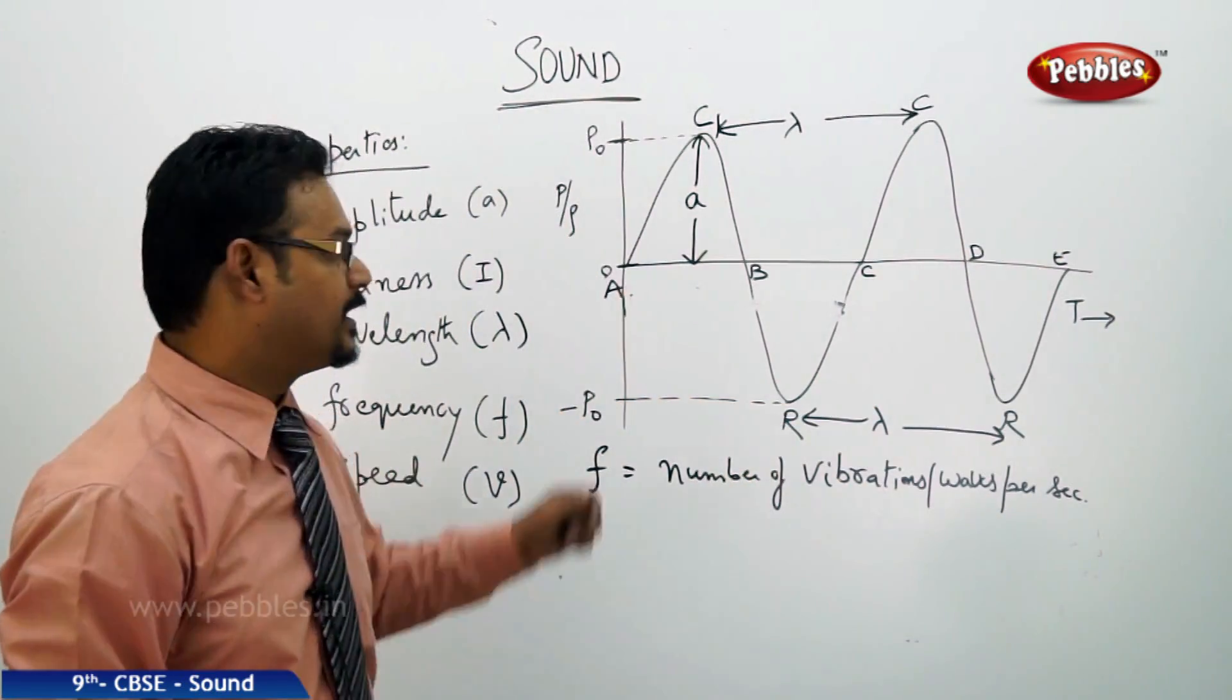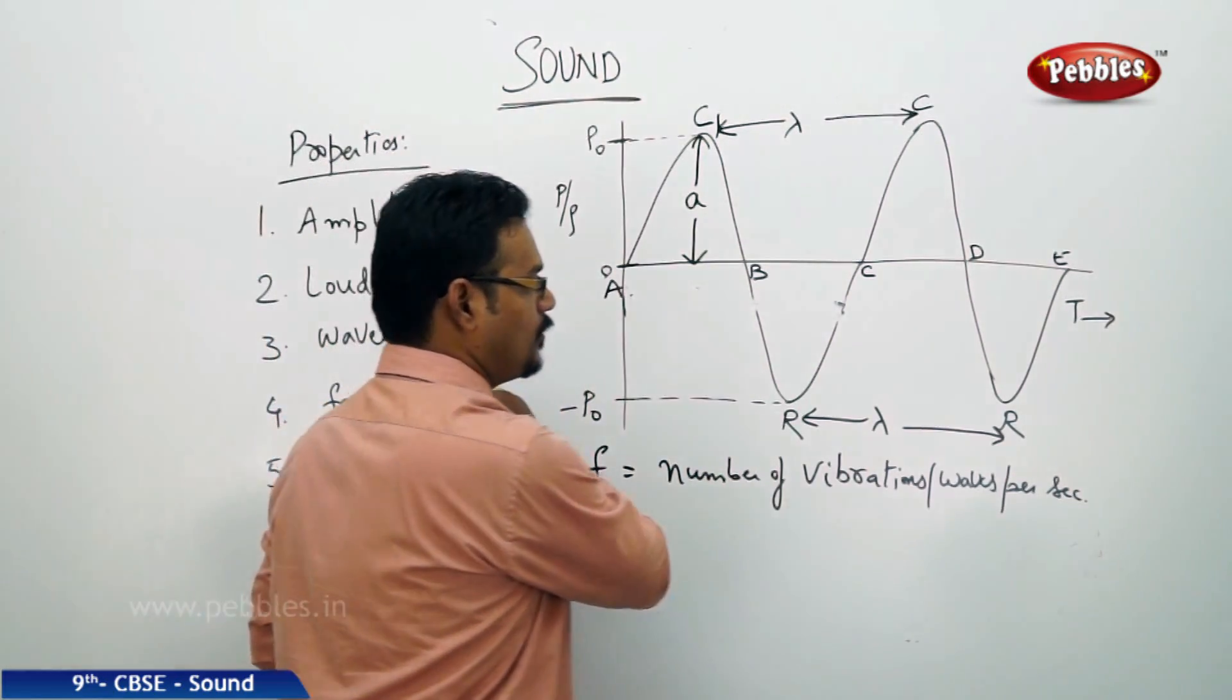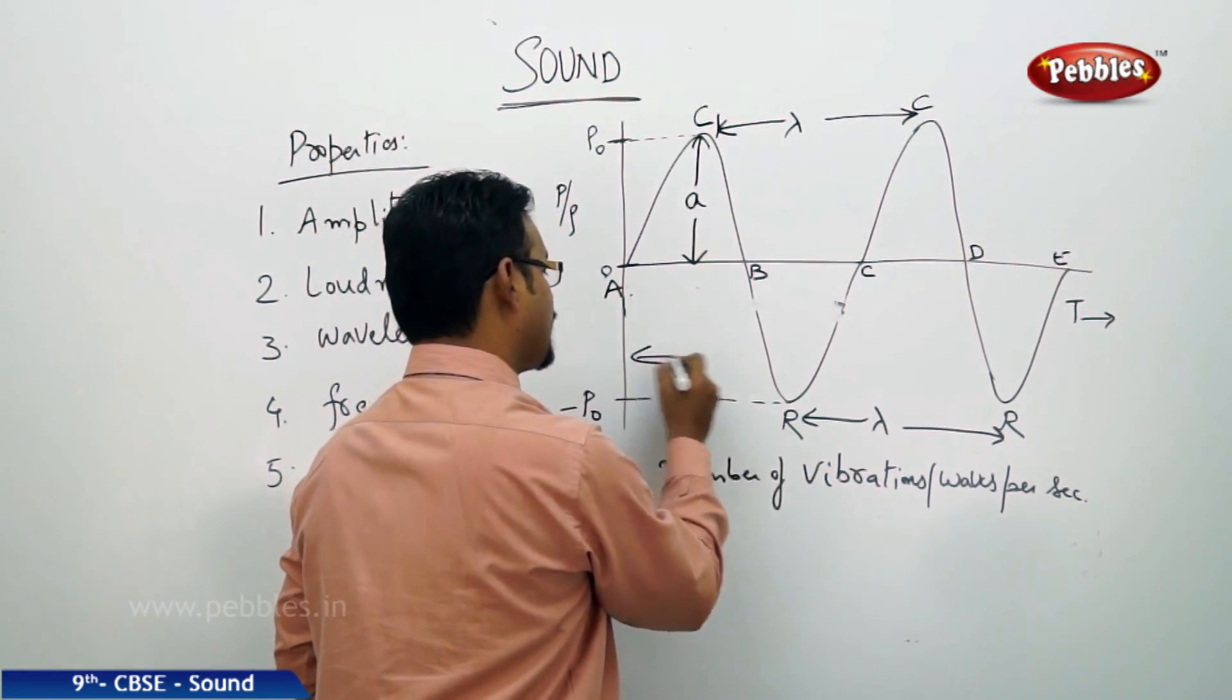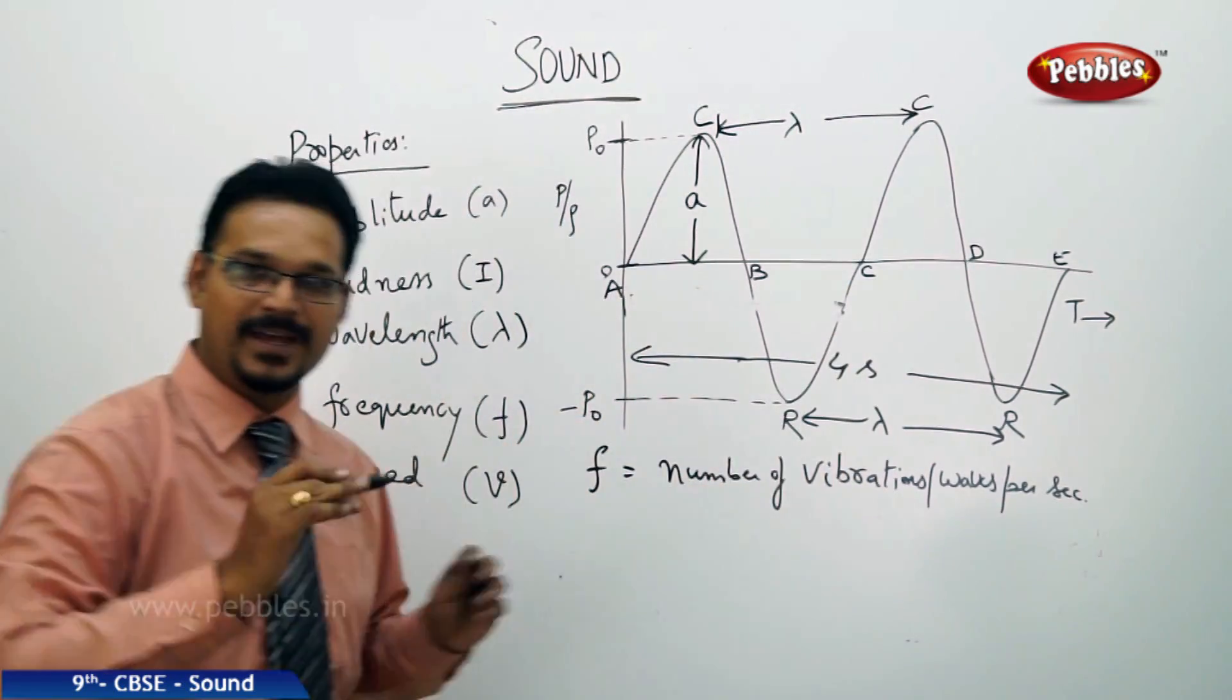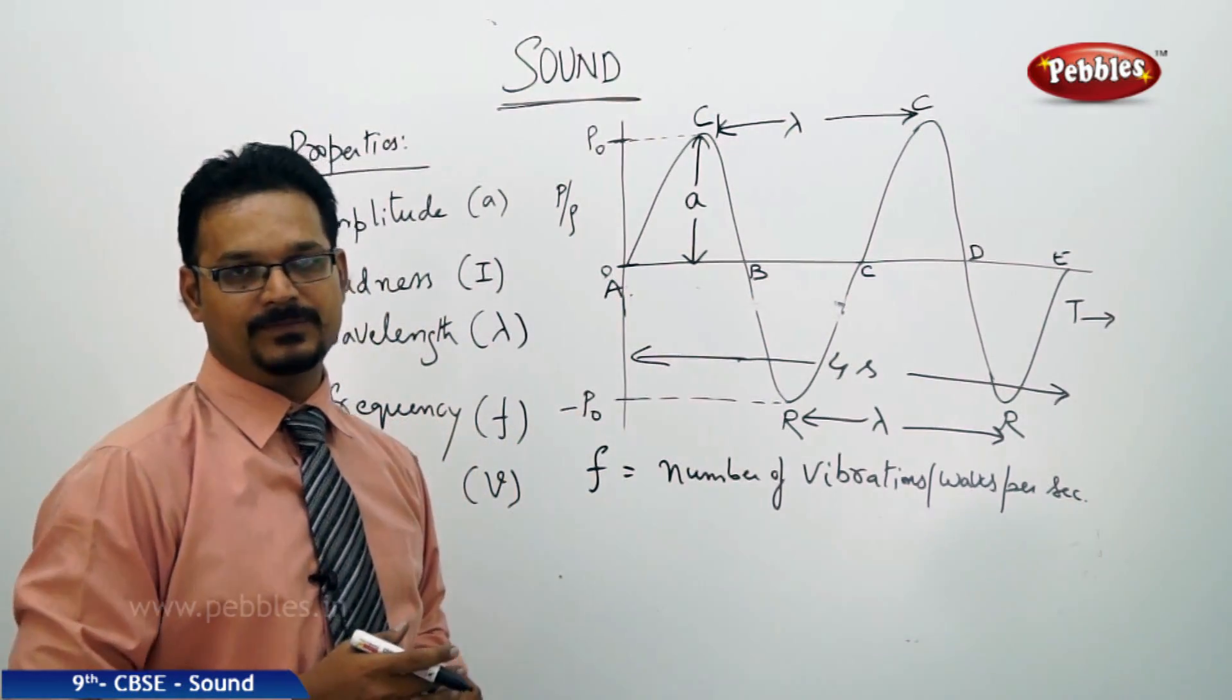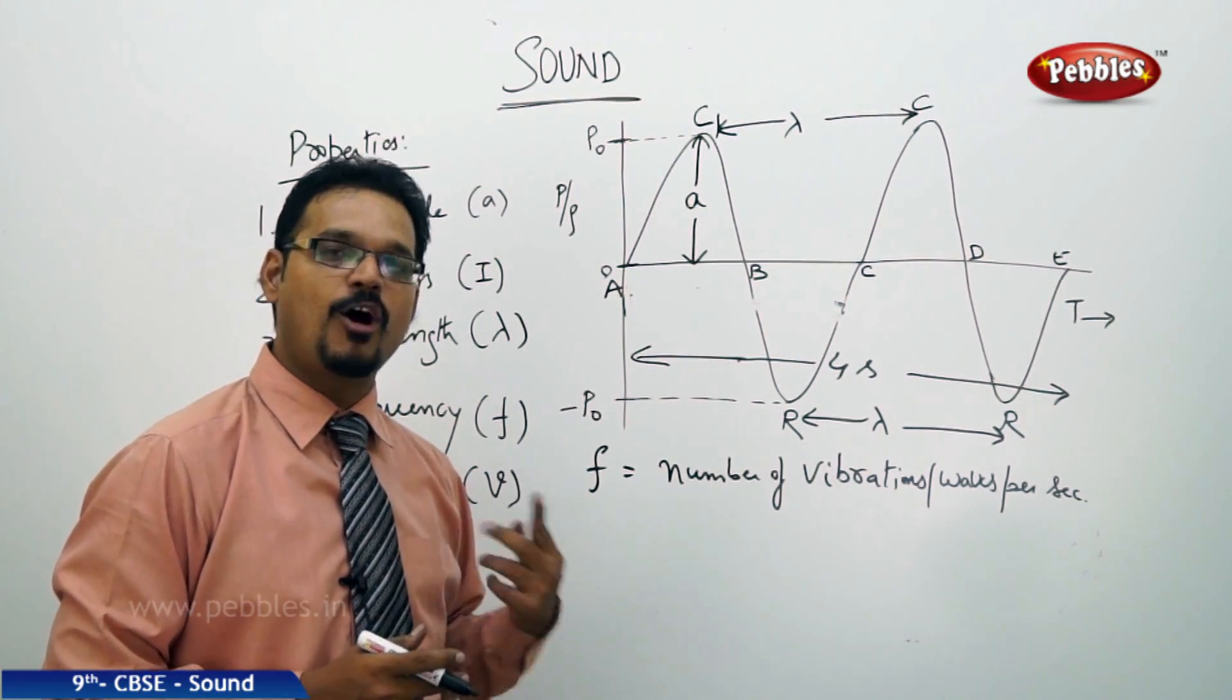So, two waves I have drawn here: A-B-C, C-D-E, two waves I have drawn. And to execute the two waves, the total time taken is four seconds. Imagine. So, the two complete waves have executed in four seconds. Then in one second, how many waves are produced?